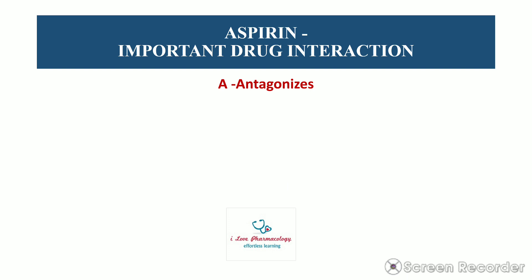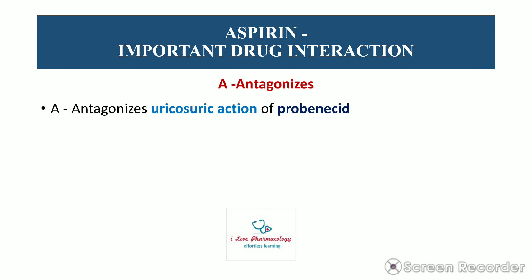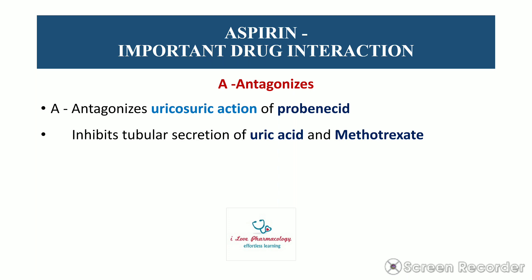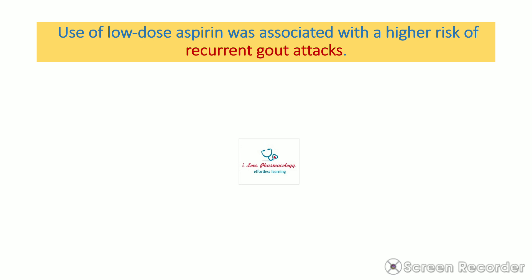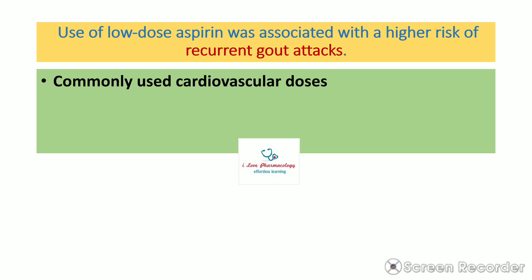The first drug interaction: Aspirin Antagonizes the uricosuric action of probenecid, which is a uricosuric drug used in gout. It basically inhibits the tubular secretion of uric acid, as well as that of methotrexate. Low-dose aspirin causes hyperuricemia, thereby increasing the risk of gouty attacks. Use of low-dose aspirin is associated with a higher risk of recurrent gout attacks.